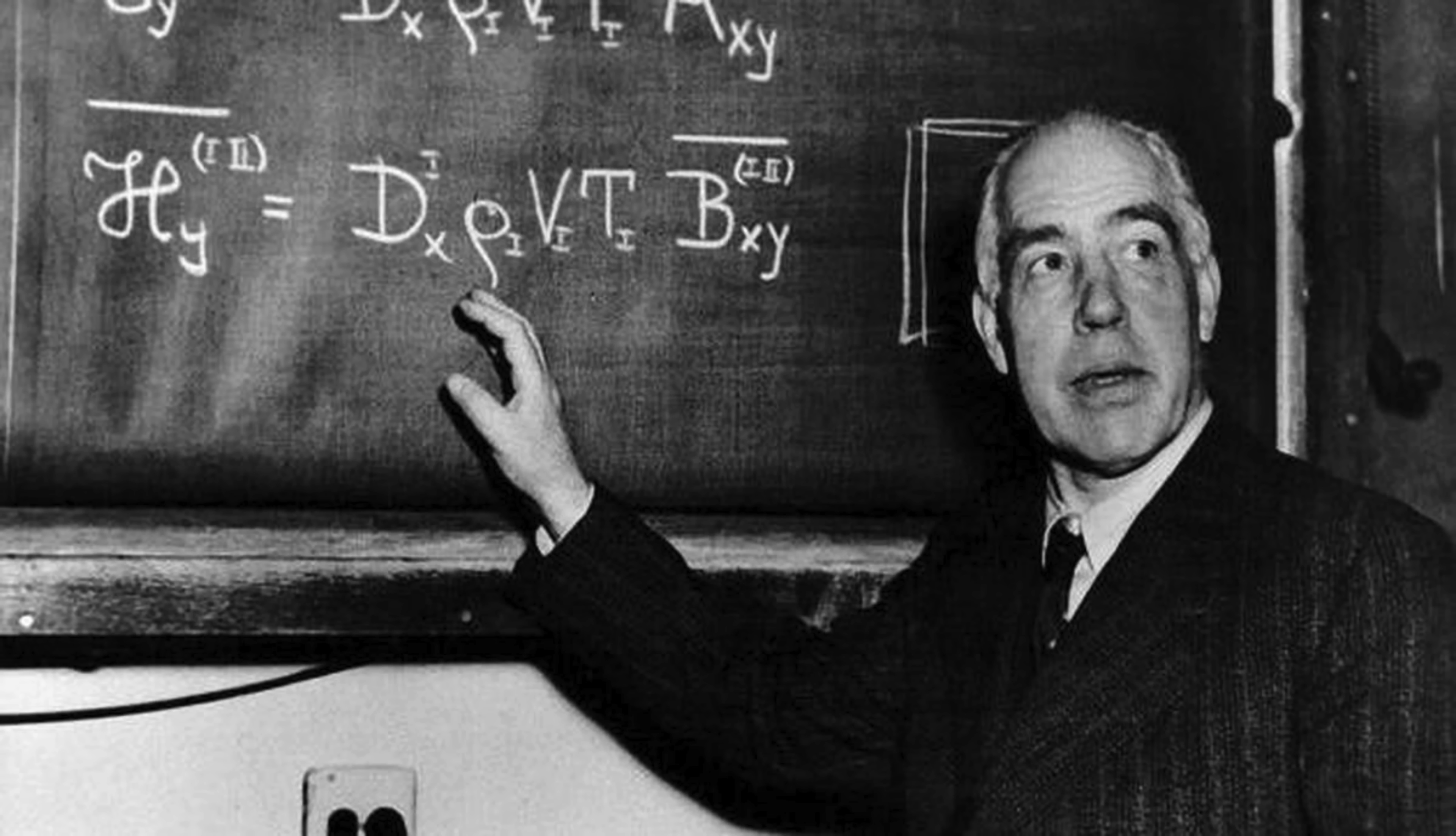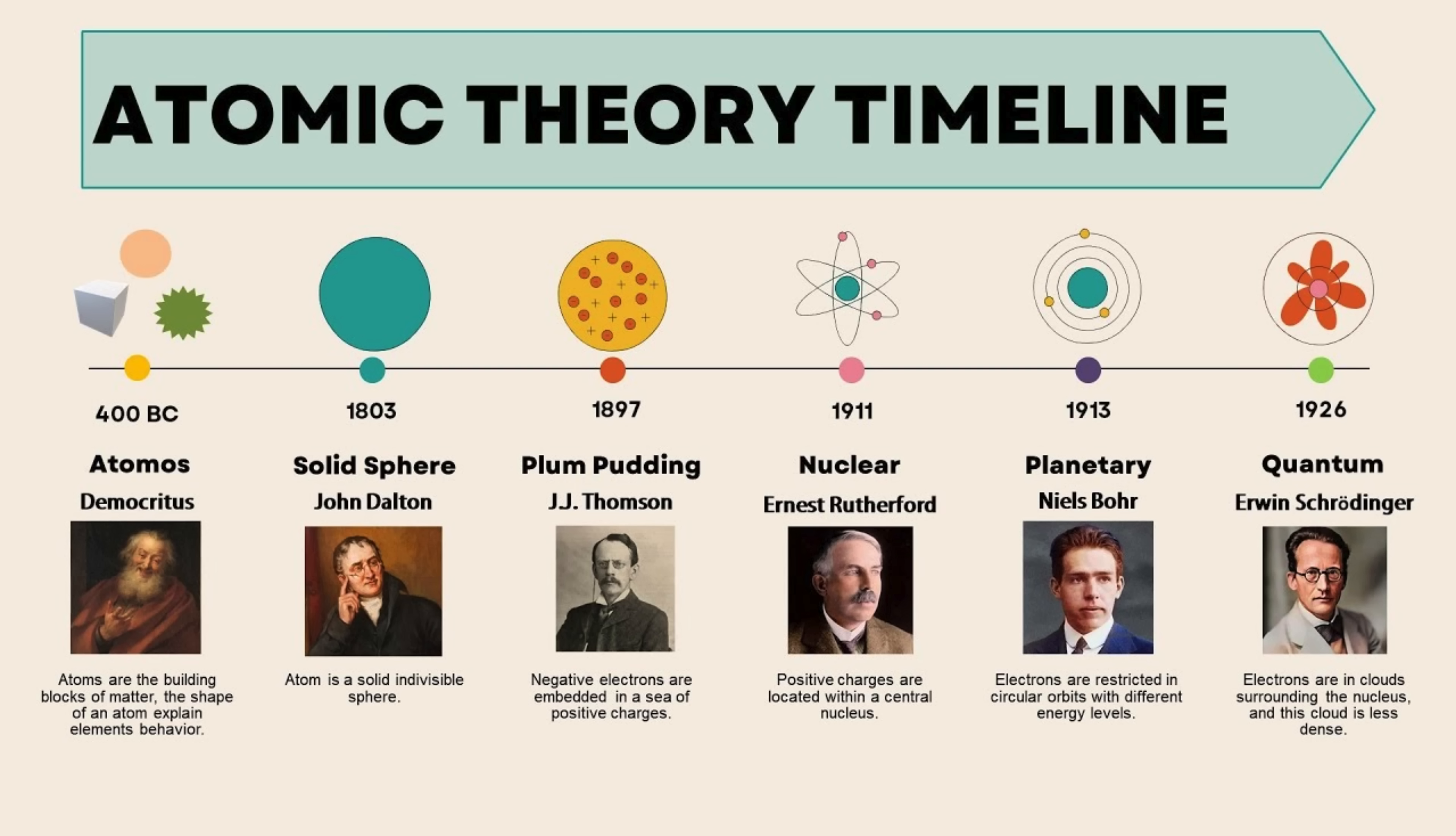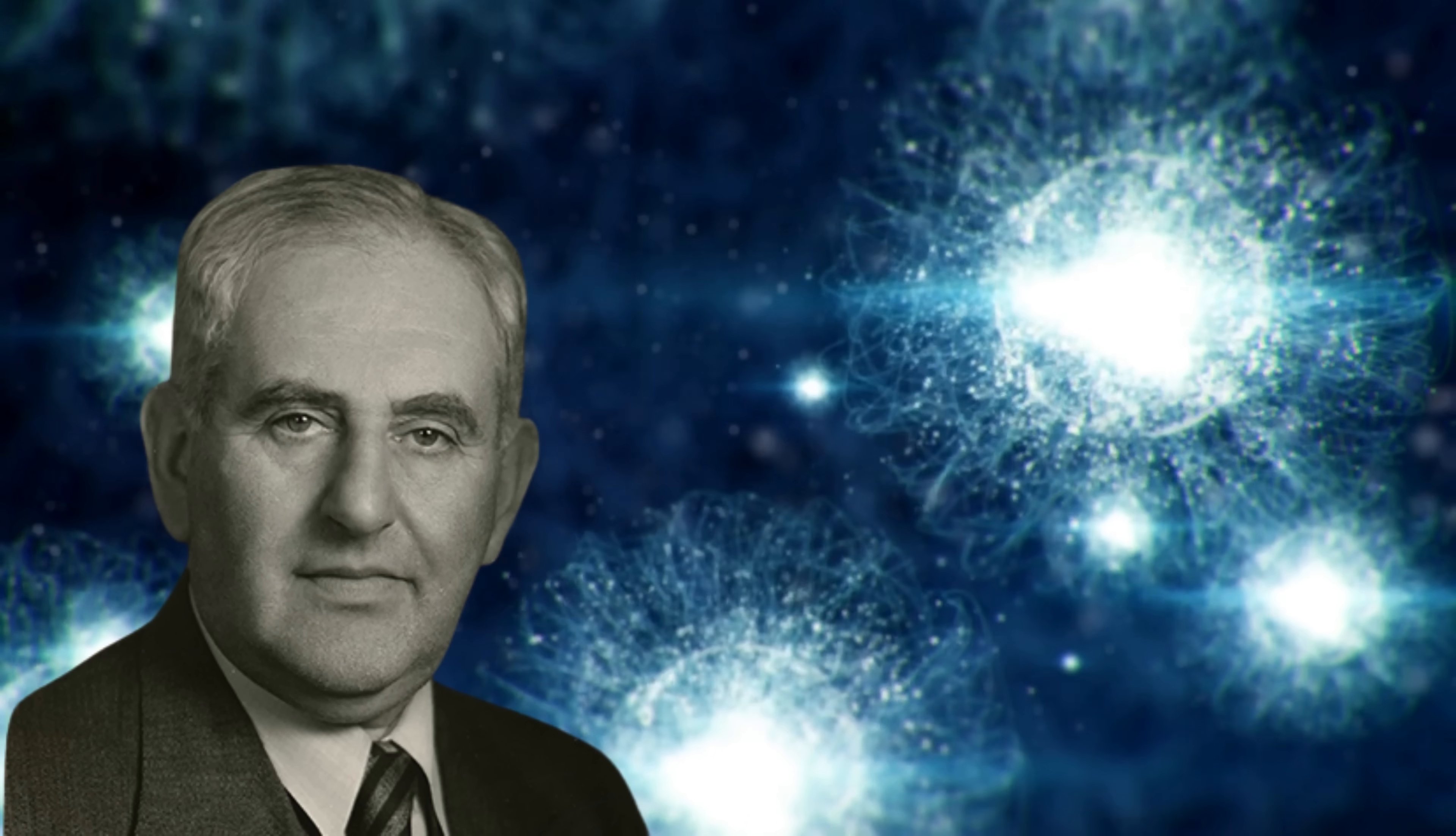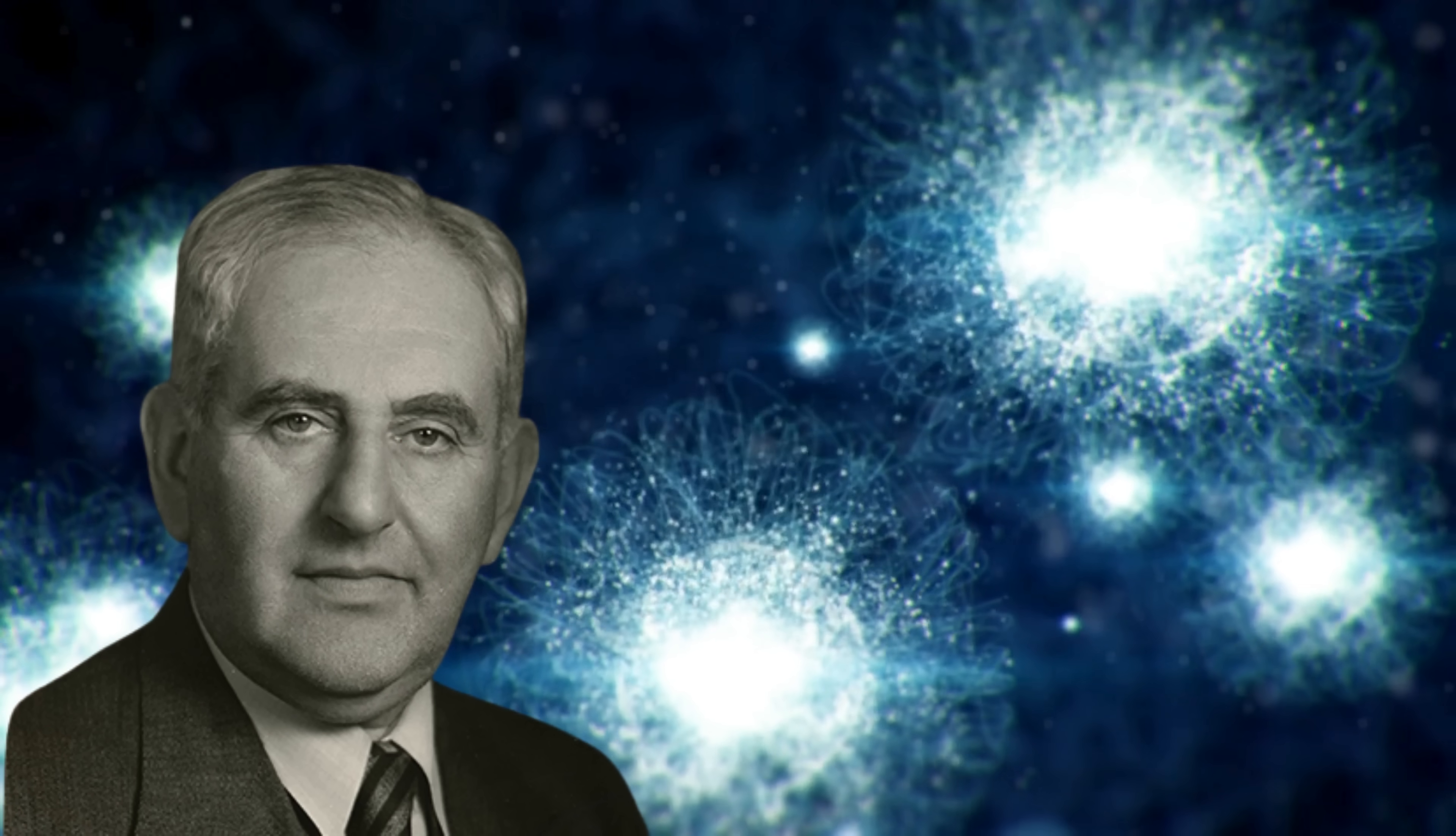Bohr's journey toward quantum mechanics was not an easy one. At first, he explored classical atomic models, but they failed to explain experimental observations. One early attempt to incorporate quantum ideas came from Arthur Eric Haas in 1910, who suggested that the size of an atom could be derived using Planck's constant. However, his work was largely ignored.